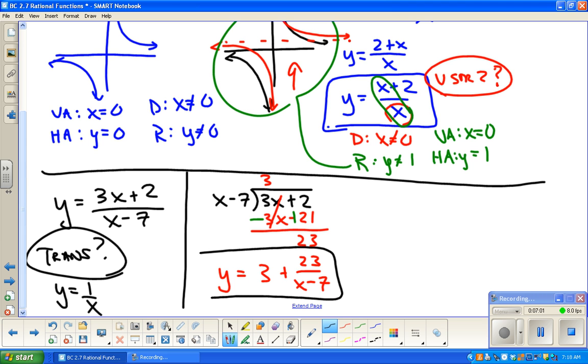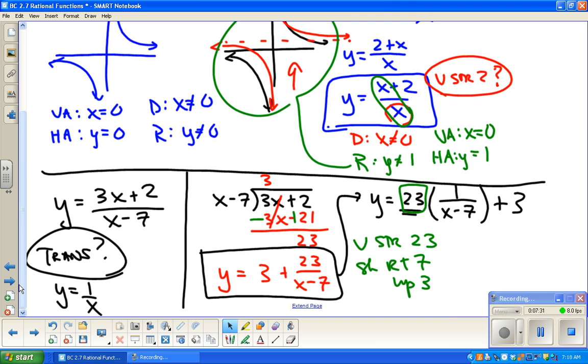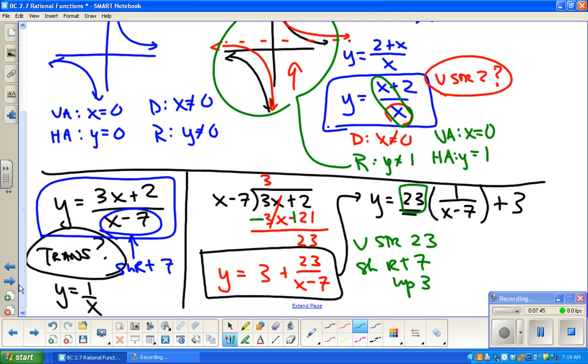So this is y equals 3 plus 23 over x minus 7. Okay, now, not so obvious in this form, but this is pretty good. I'm going to rewrite this. y equals 23 times 1 over x minus 7 plus 3. Okay, so what happened? Well, there's a 23 times on the outside. So that's a vertical stretch of 23. That's a big stretch. It shifted right 7 and up 3. Now, just a couple quick notes. If we go back to the original equation, you could probably see, because the vertical asymptote is 7, you could probably see that shift right of 7.